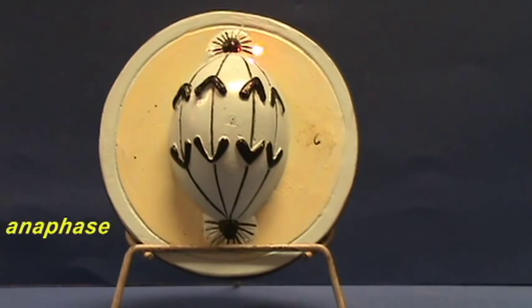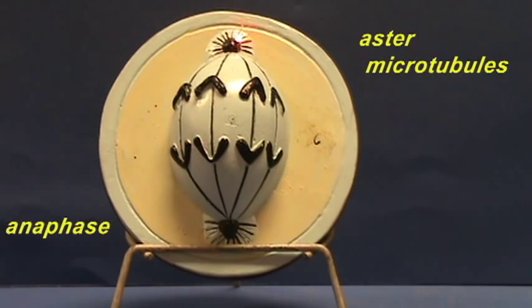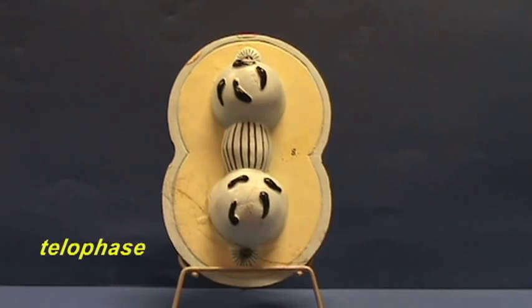Notice that there are microtubules radiating out from each centriole. These are referred to as aster microtubules because they kind of appear like a star in the way that the microtubules radiate out from all directions. This shows the final phase of mitosis.